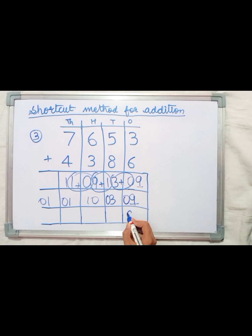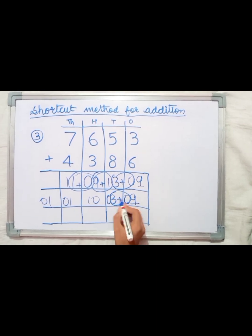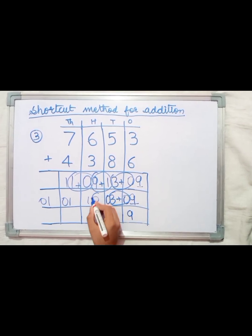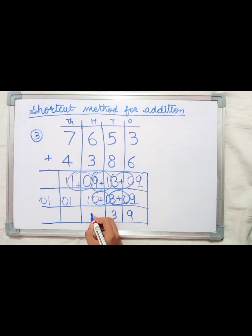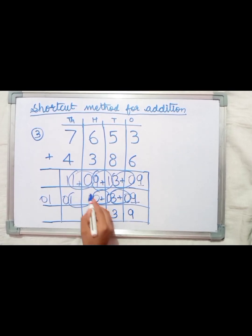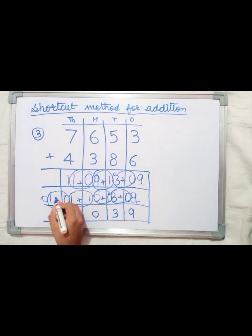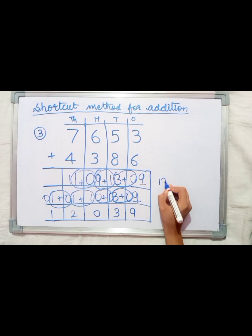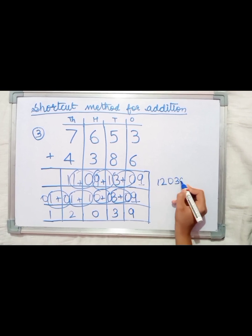Write 9 as is. 3 plus 0 equals 3. 0 plus 0 equals 0. 1 plus 1 equals 2. 1 plus 0 equals 1. Our answer is 12,039.